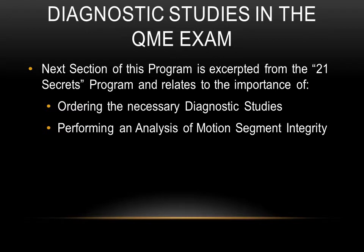Let's begin the final section of this program related to special tests in the QME exam. We've now handled the physical examination findings for the cervical, thoracic, and lumbar spine, both in the event of either radiculopathy and/or myelopathy. We're now going to move into special tests in the radiographic examination of the QME exam. For many of the permanent impairments described in the AMA guides, diagnostic studies are required for the determination of permanent impairment, and we're going to talk about some of those here as they relate to the spine.